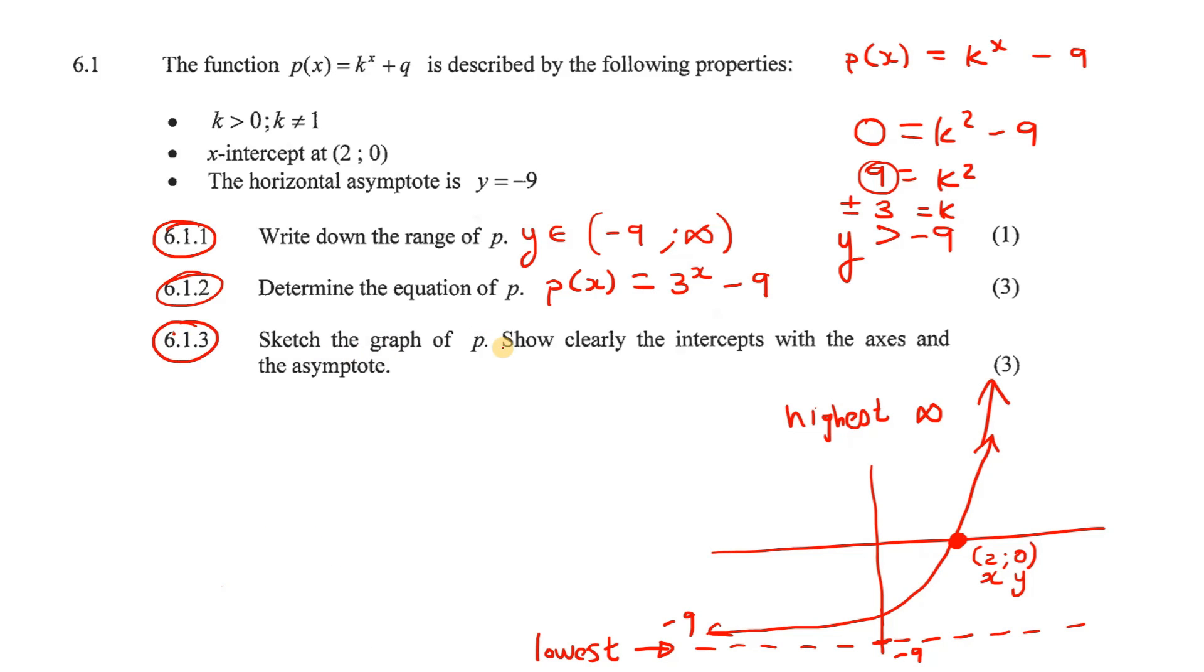This question says, sketch the graph of p. Show clearly the intercepts with the axes and the asymptotes. So we've drawn most of it. But we just haven't shown this part over here. We've showed the asymptote, which actually the correct way is to say y equals negative 9 like that. We obviously don't want to say lowest and highest. And then we don't need to say x and y over here. Now we just need to go find this point. Because they said show the intercepts with the axes. That means the x and the y.